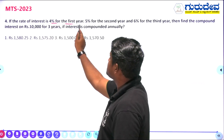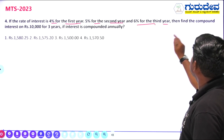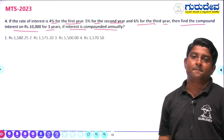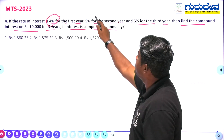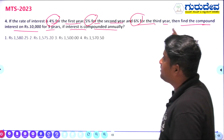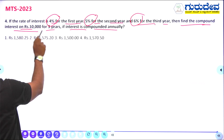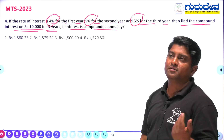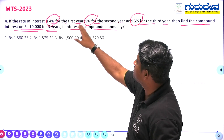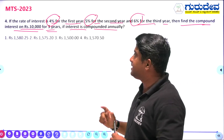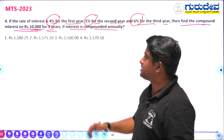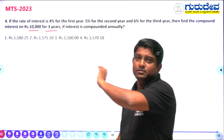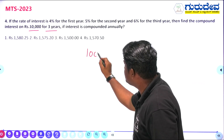Fourth question: if the rate of interest is 4% for the first year, 5% for the second year, and 6% for the third year, find the compound interest on 10,000 rupees for three years, compounded annually. The principal amount is 10,000 rupees. Since interest rates are different each year, we use the tree method.